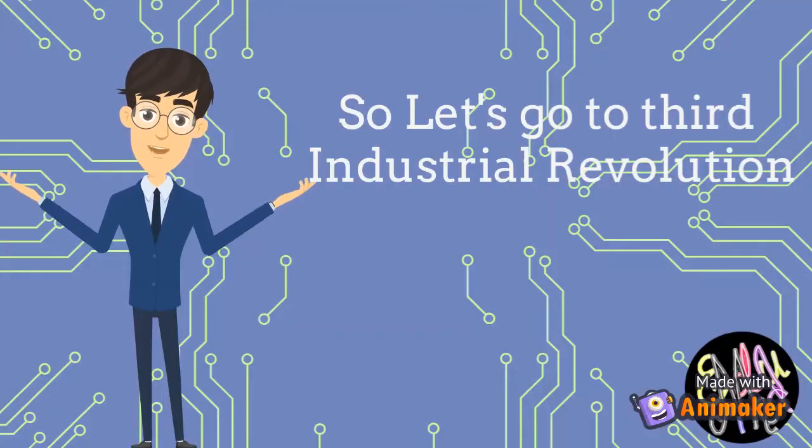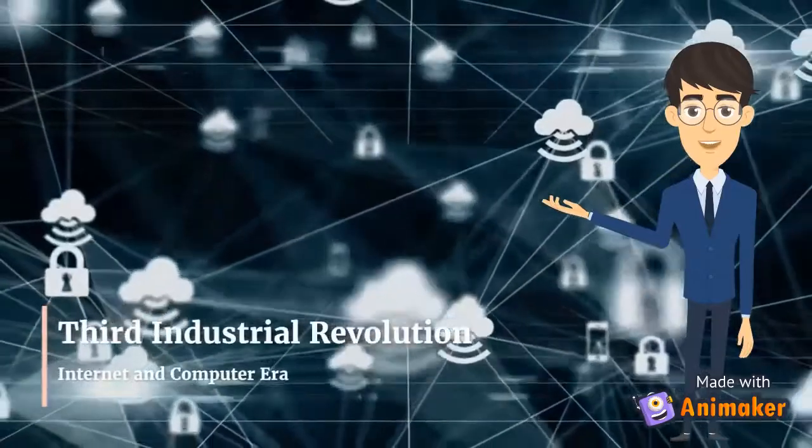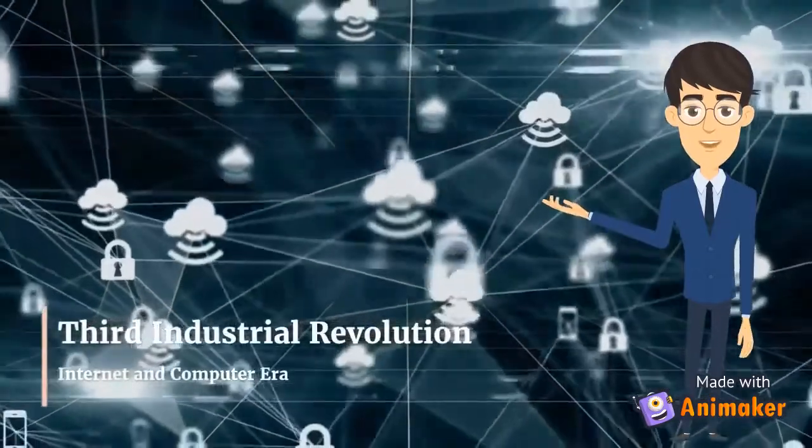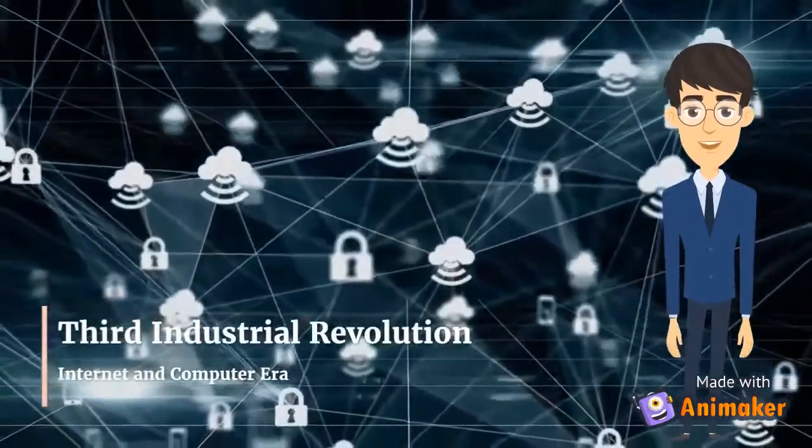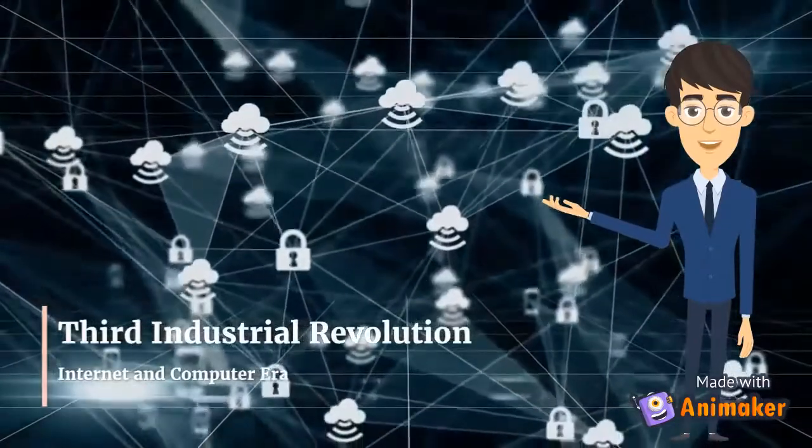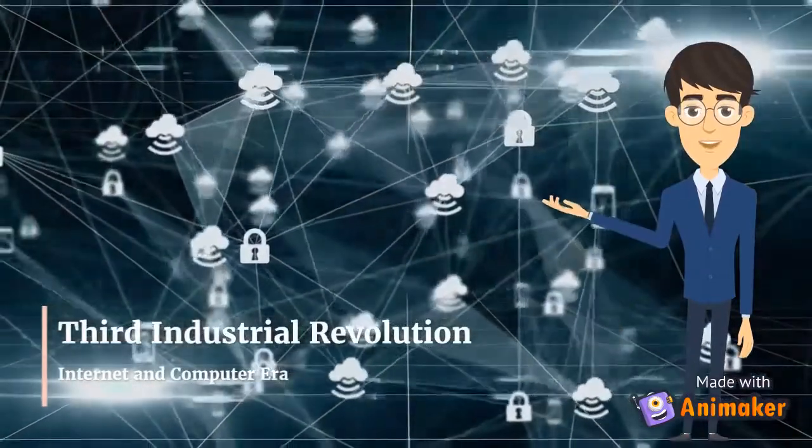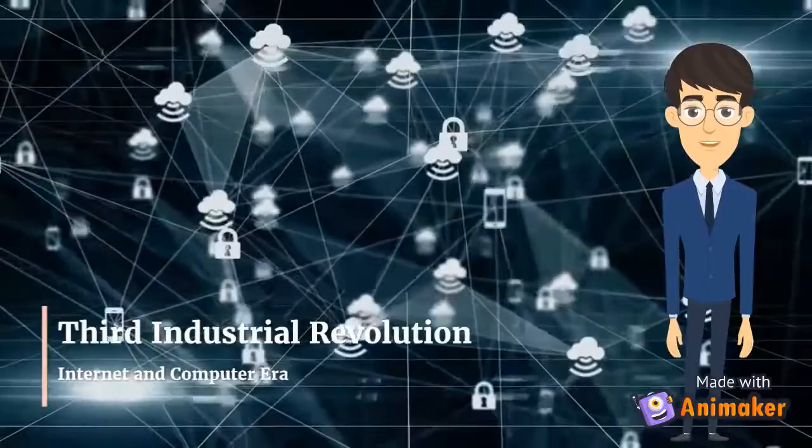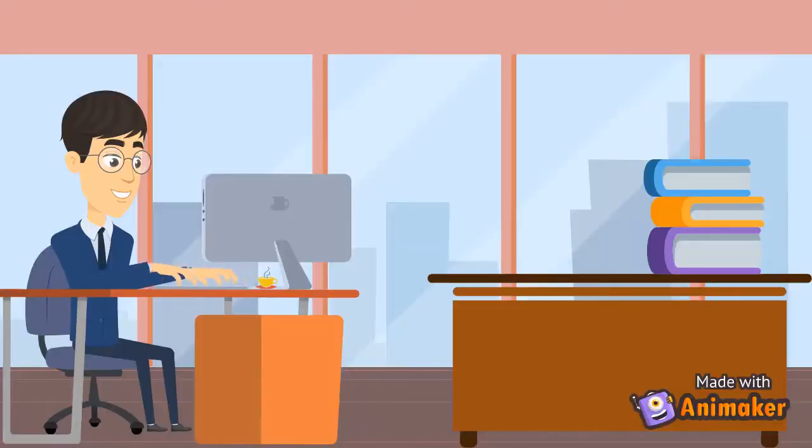So let's go to the Third Industrial Revolution. The Third Industrial Revolution, also known as the digital revolution, occurred in the late 20th century. This was the era of internet and binary computers. The next significant development in communication technologies was the supercomputer, with extensive use of computer and communication technologies in the production process.